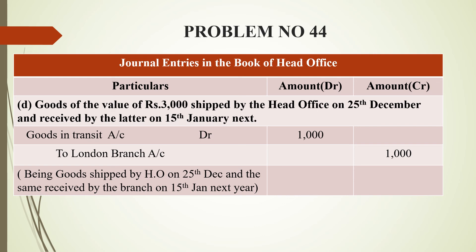The last entry: goods of the value of rupees 3,000 shipped by the head office on 25th December and received by the branch on 15th January next year. This is goods in transit. The goods were sent by the head office but the branch had not received them by 31st December. The entry is: Goods in Transit Account debit to London Branch Account. London branch is credited as the goods go out. The value is rupees 3,000. The narration is: being goods shipped by head office on 25th December, received by branch on 15th January next year.